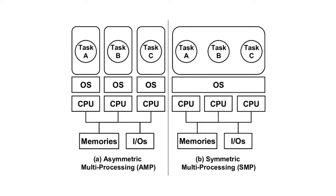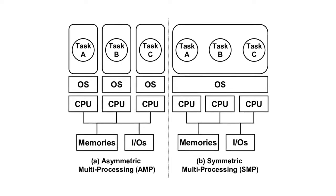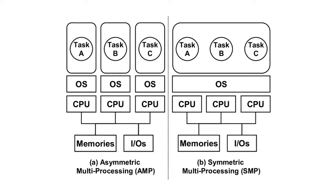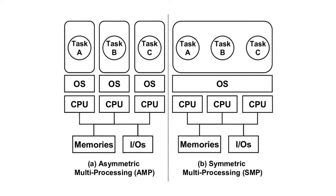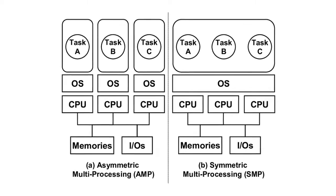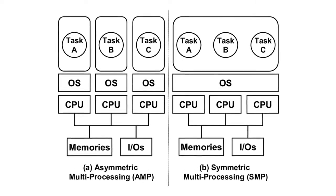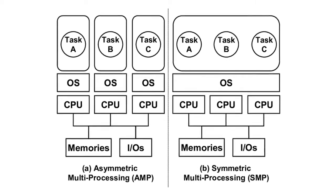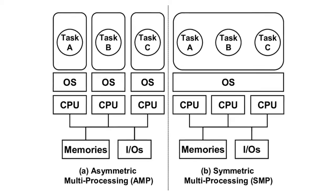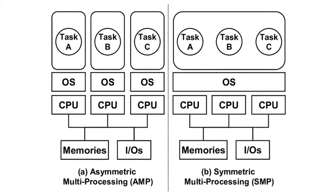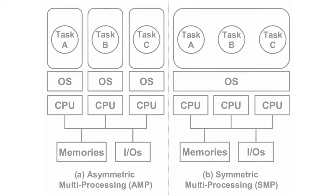This is in contrast to symmetric multiprocessing, in which the operating system evenly distributes the application load across multiple processors. In SMP, individual processes are not mapped to specific processors, but instead are assigned to available processors by the operating system.